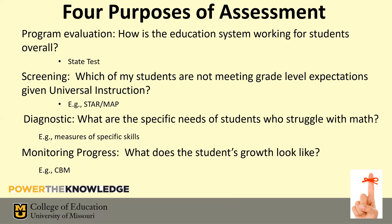Then we go into diagnostic: what are the specific needs of a student who struggled with math? Once you see a kid struggling on the STAR, MAP, or something like that, we dive in to get more diagnostic data and measure very specific skills — their multiplication, addition without regrouping, subtraction, et cetera. And then we monitor progress. CBM — curriculum-based measurement — Aimsweb, are ideally suited to monitor progress. For screening, I'm probably more likely to use something like STAR or MAP. Diagnostic is a combination of the two, to really dive in and see what specific skills a kid struggles with.